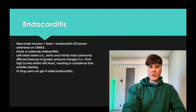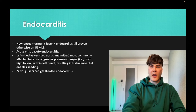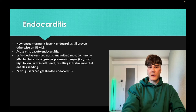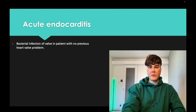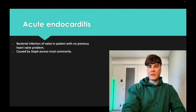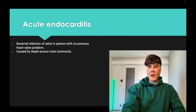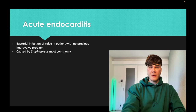Be aware that IV drug users can get right-sided endocarditis due to inoculation of the veins — staph aureus goes back to the right side of the heart, causing tricuspid and pulmonic lesions. Acute endocarditis is going to be staph aureus. It's a pass-level point you've got to know as the most common organism, typically in a patient with no prior valve issues — IV drug user is the classic example — who now has murmur plus fever.